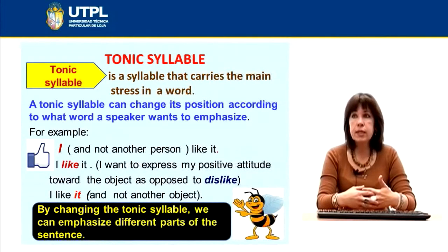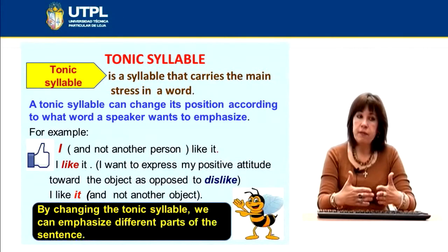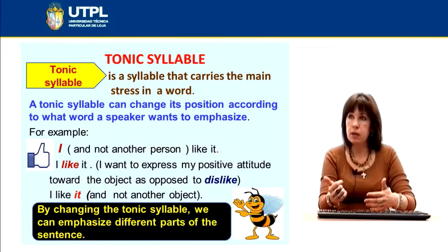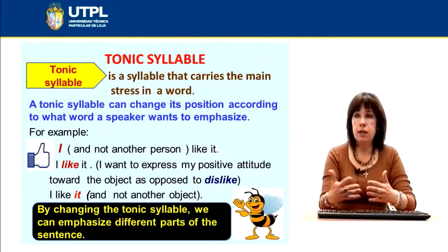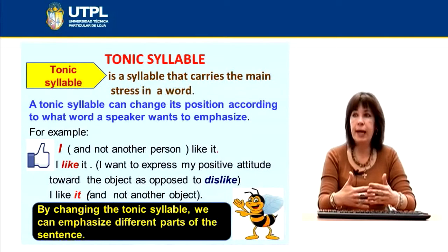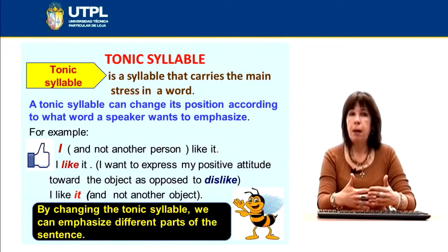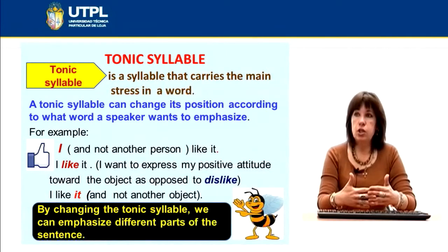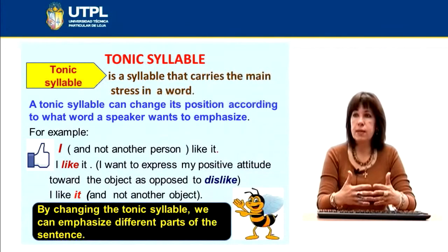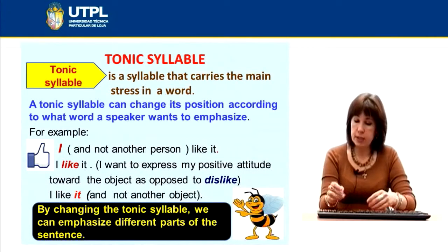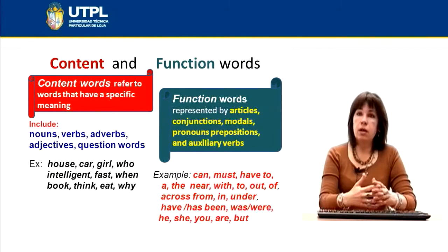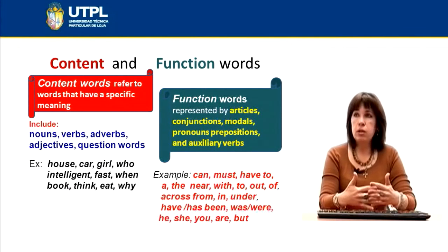When speaking about stress within a sentence, we have to mention the term 'tonic syllable.' A tonic syllable is a syllable that carries the main stress in the word. Within a sentence, some words carry a major stress and others a weaker stress. The tonic syllable can change its position according to what word the speaker wants to emphasize. For example: 'I don't like it' or 'I like IT' — the sentence is the same but the stressed word changes.